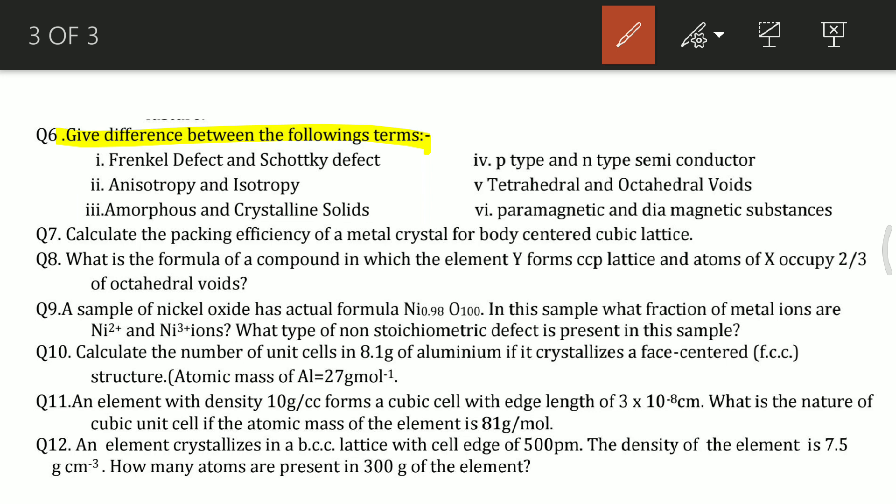Question number 6: give differences between the following terms. In the solid state chapter, what differences can be asked in board examination? First is Frenkel defect and Schottky defect. Next is anisotropy and isotropy. You should be careful. When you refer to NCERT, on the third page you will find the differences very easily. Next is amorphous and crystalline solids.